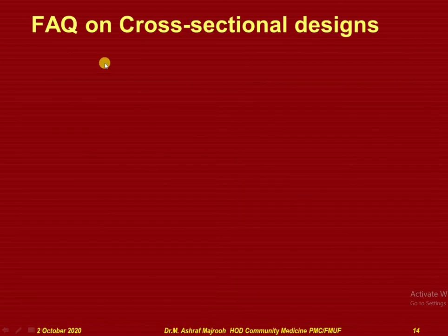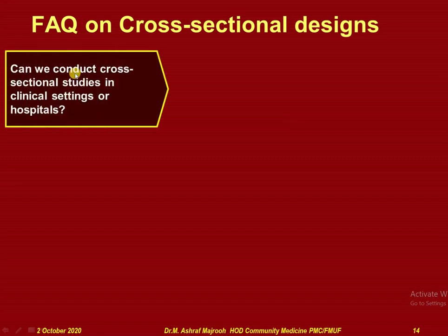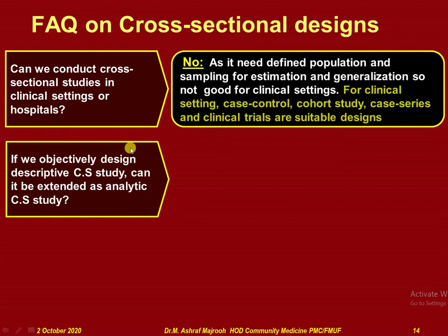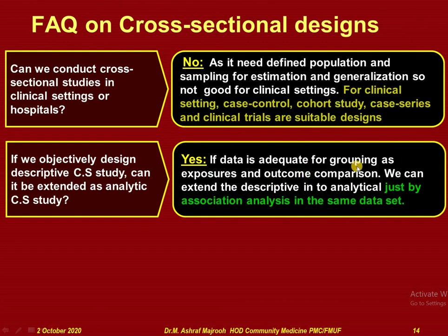Frequently asked questions: Can we conduct cross-sectional studies in a clinical setting or hospital? The answer is no, as it requires a defined population and sample for estimation and generalization. For clinical settings, case control, cohort studies, case series, and clinical trials are usually more suitable. Can a descriptive cross-sectional study be extended as an analytic study? Yes — if data is adequate for grouping as exposure and outcome comparison, we can extend the descriptive into analytic by performing association analysis on the same dataset.